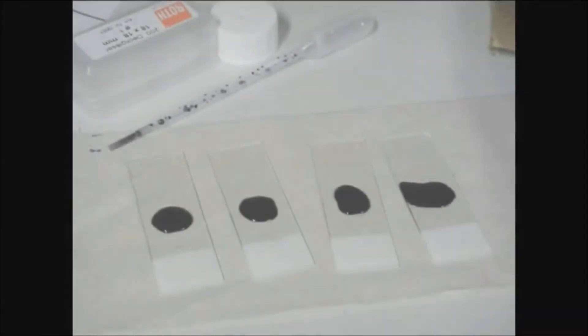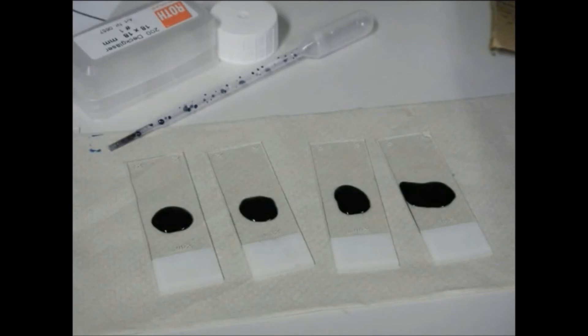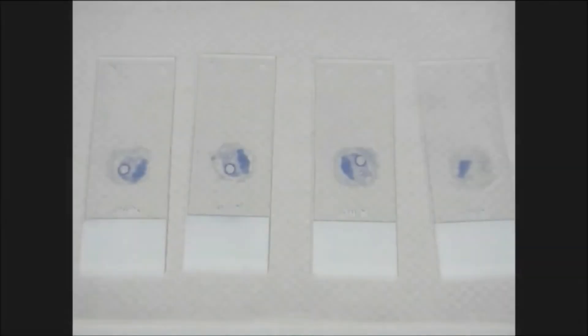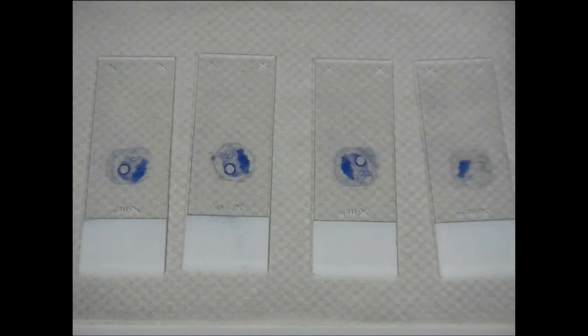Several methods for staining embedded sections have been established for use here. Sanderson's Rapid Stain has, for example, proven suitable for the fast staining of samples. For an H&E stain, the section must first be deplastified.